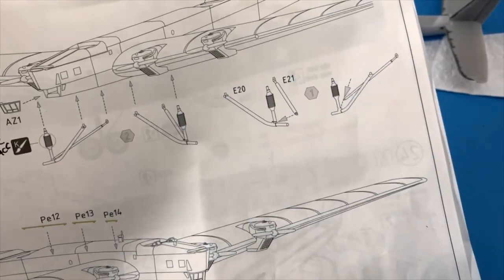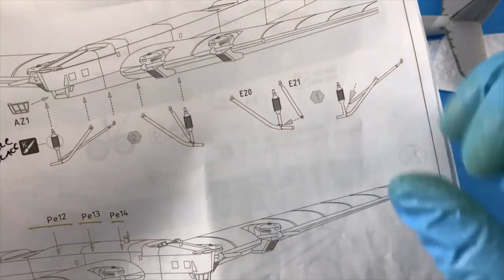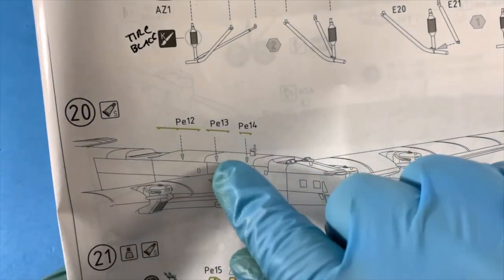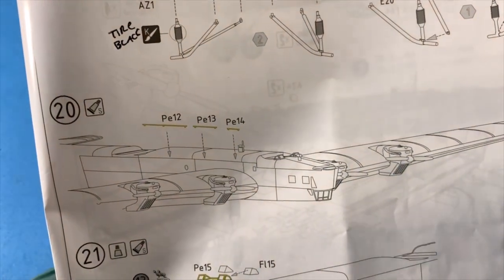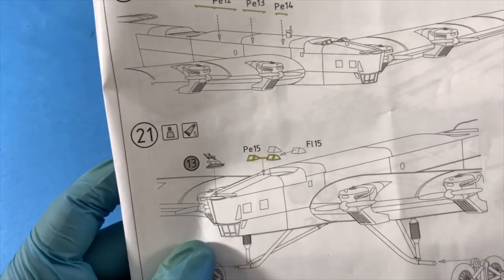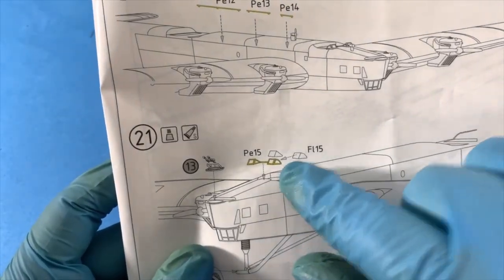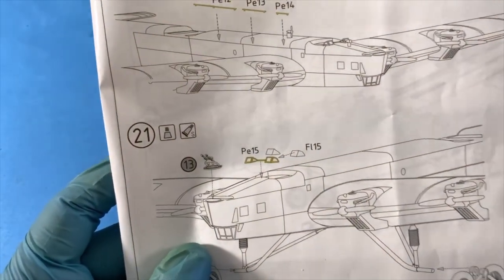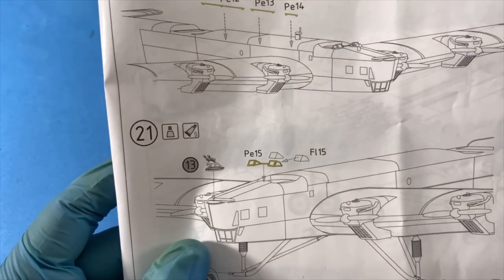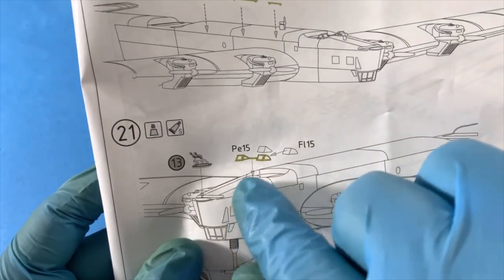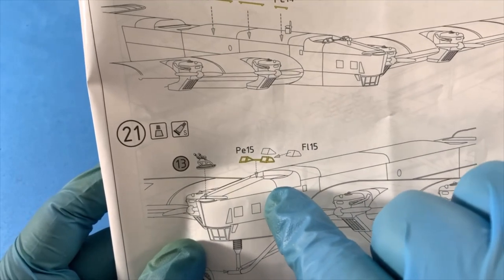Then these PE parts on the side here, putting those on. And then this part, which is kind of the part I'm thinking about the most because I've never really done anything like this—bending the PE part to form the front piece.